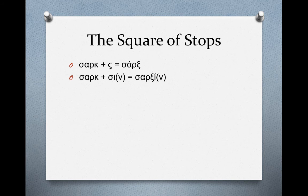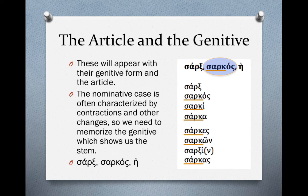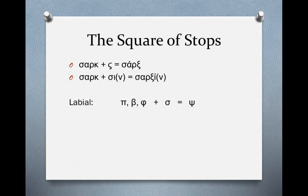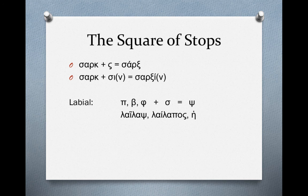There are three categories of the square of stops. The labial category: if a stem ends with pi, beta, or phi, and the next letter is sigma — which happens in the nominative singular and dative plural — those letters fuse to become psi. Again, it's a logical change because the two letters sound like that. A word that illustrates this is lailaps, meaning 'storm,' memorized as: lailaps, lailapos, hē. The pi of the stem, when it meets sigma, becomes psi.